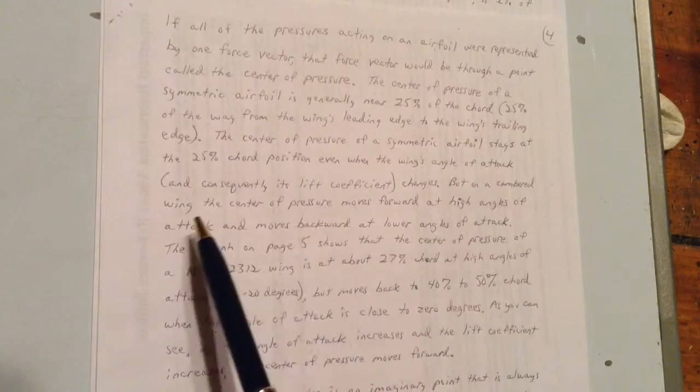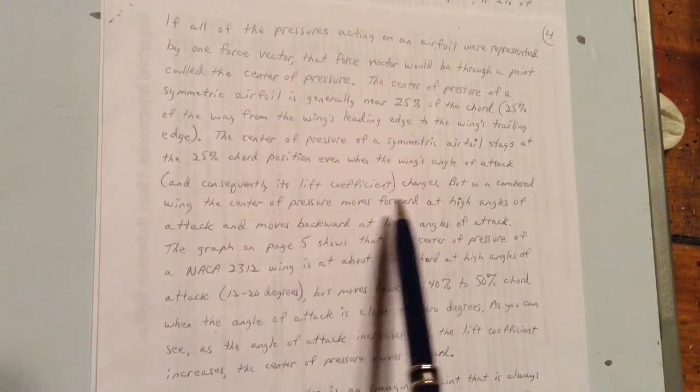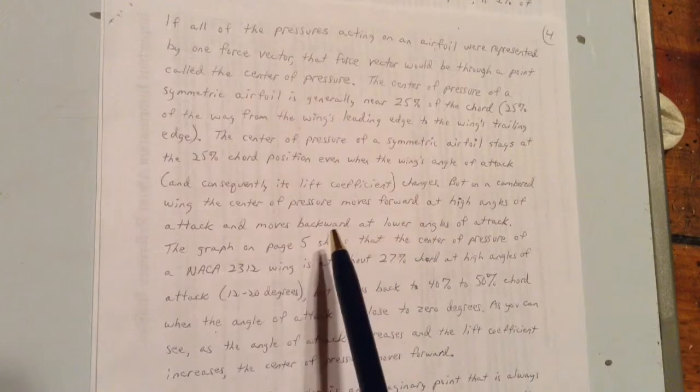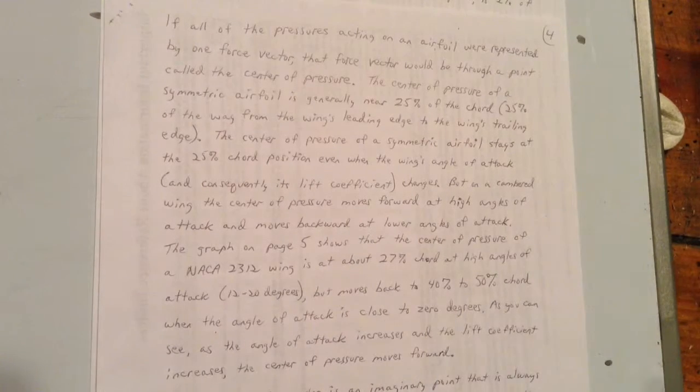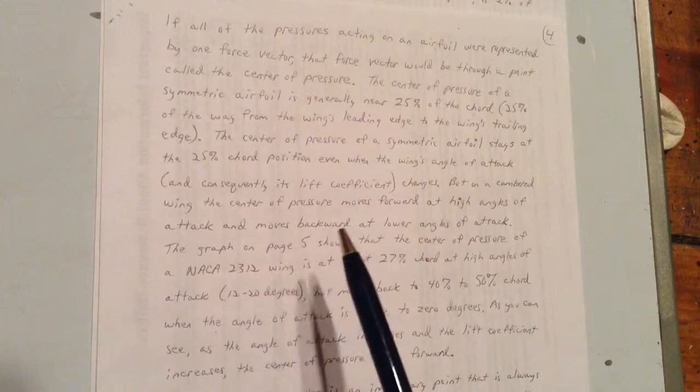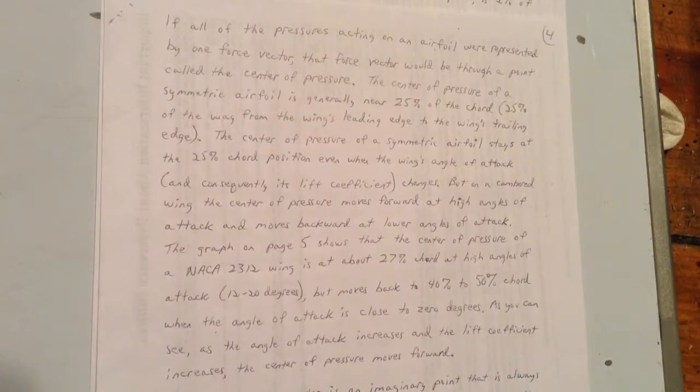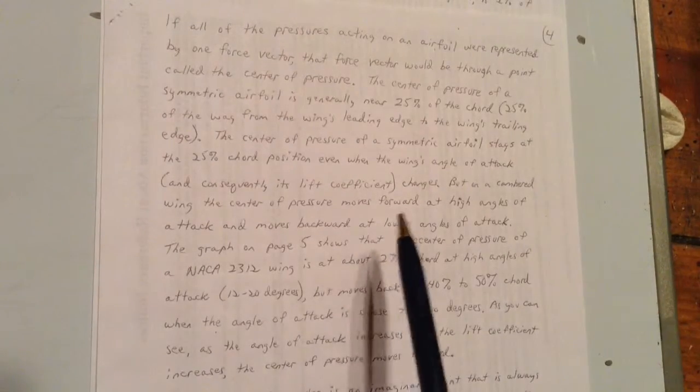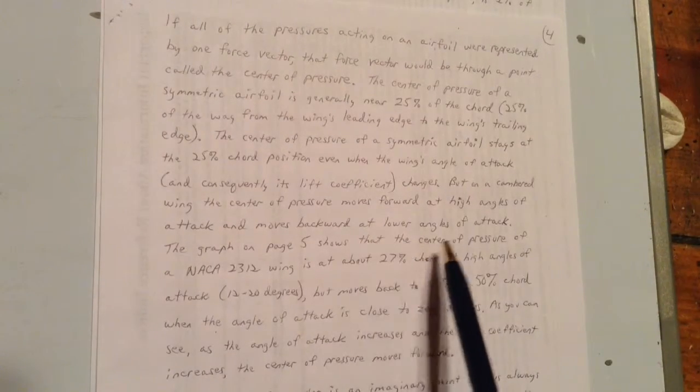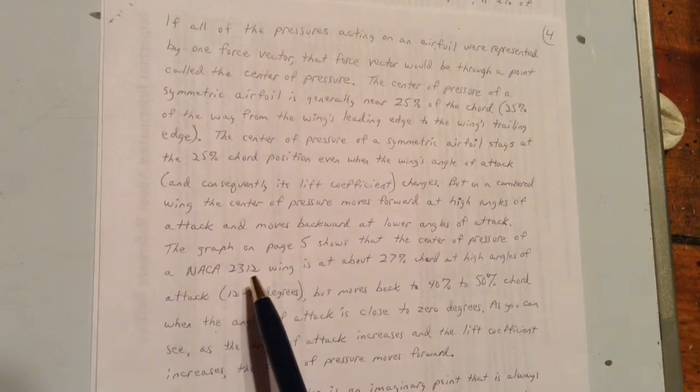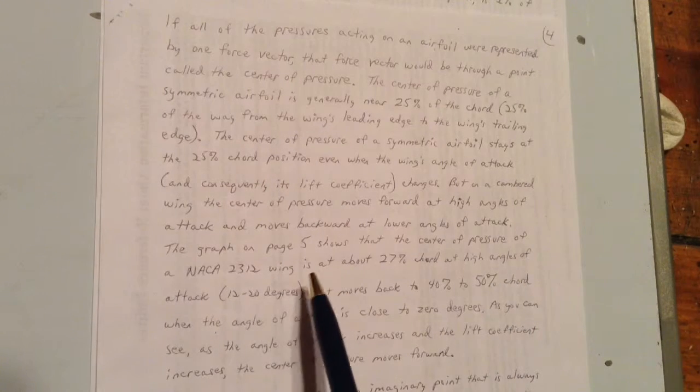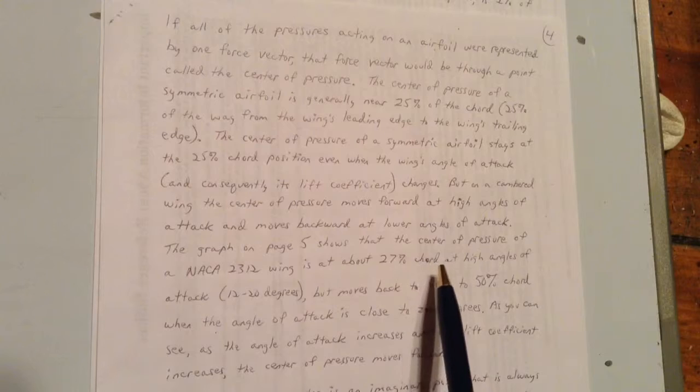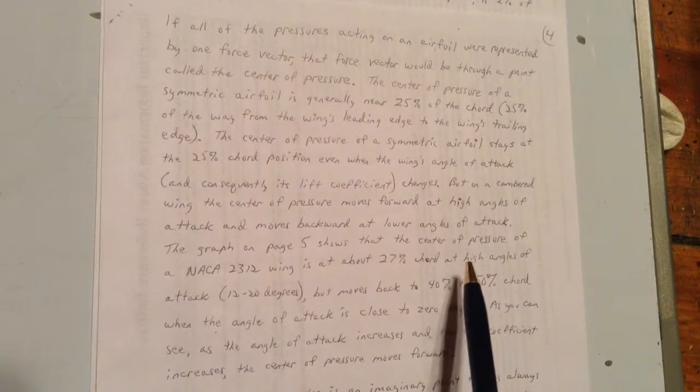But on a cambered wing, the center of pressure moves forward at high angles of attack, and moves backward at lower angles of attack. The graph on page 5, that is this graph, we'll look more at it soon, shows that the center of pressure of a NACA 2312 wing is at about 27% cord at high angles of attack.